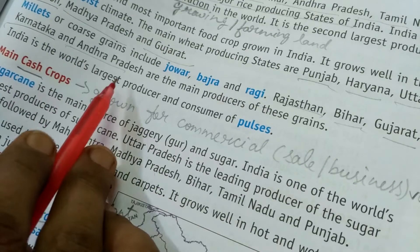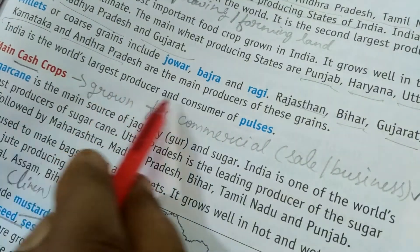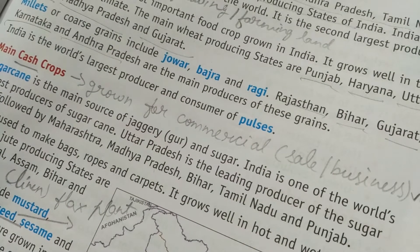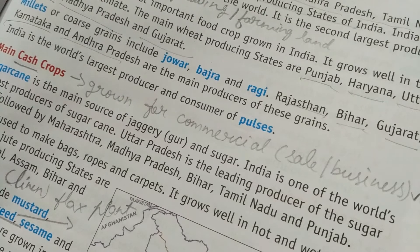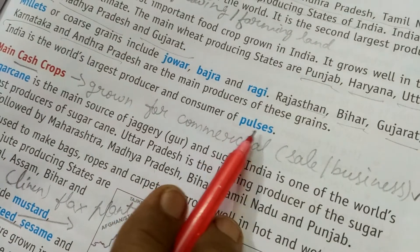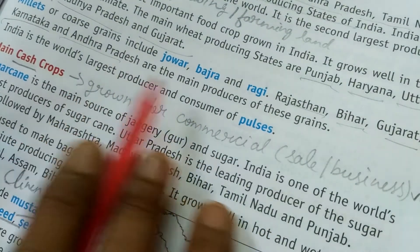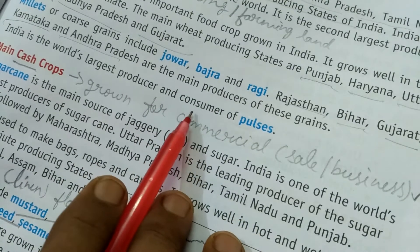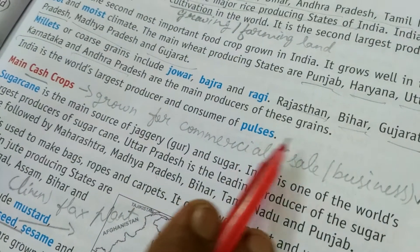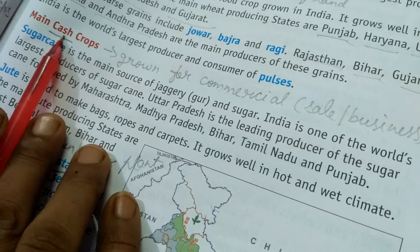India is the world's largest producer and consumer of pulses. Different types of pulses we use include masoor, moong, green moong, yellow moong, chane ki daal, arhar ki daal, and tur daal. We are the largest producer as well as the largest consumer of pulses in the world. This covers all the main food crops of India.